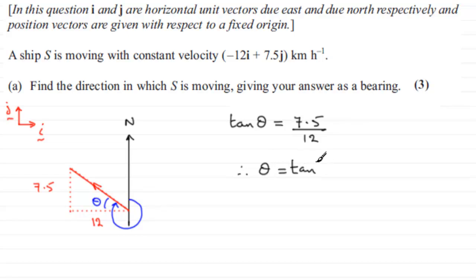If we take the inverse tan of both sides, you get θ = tan⁻¹(7.5/12). And if you put your calculator in degrees mode, you should find that you get 32.005 degrees.